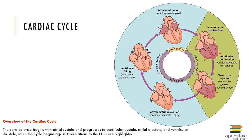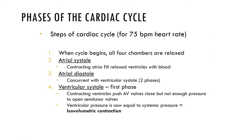For any one chamber, the cardiac cycle can be divided into two phases: systole, or contraction, and diastole, or relaxation. A sequence of systole and diastole in either the atria or ventricles lasts 800 milliseconds, representing a heart rate of 75 beats per minute. When the cardiac cycle begins, all four chambers are relaxed and the ventricles are partially filled with blood, with AV valves open and semilunar valves closed.